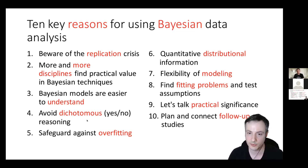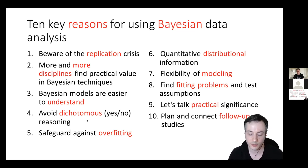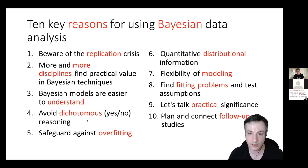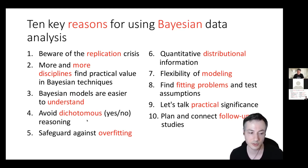The nice thing is that in frequentist statistics, if you change to a different kind of analysis you might have to use a different framework, a different algorithm, a different library. That doesn't happen normally in Bayesian statistics. Once you know how to do a linear regression, it's not a big step — you're still going to use the same diagnostics and the same input syntax for multilevel models or more complex analysis. So it does require effort, absolutely, but the effort can be incremental.